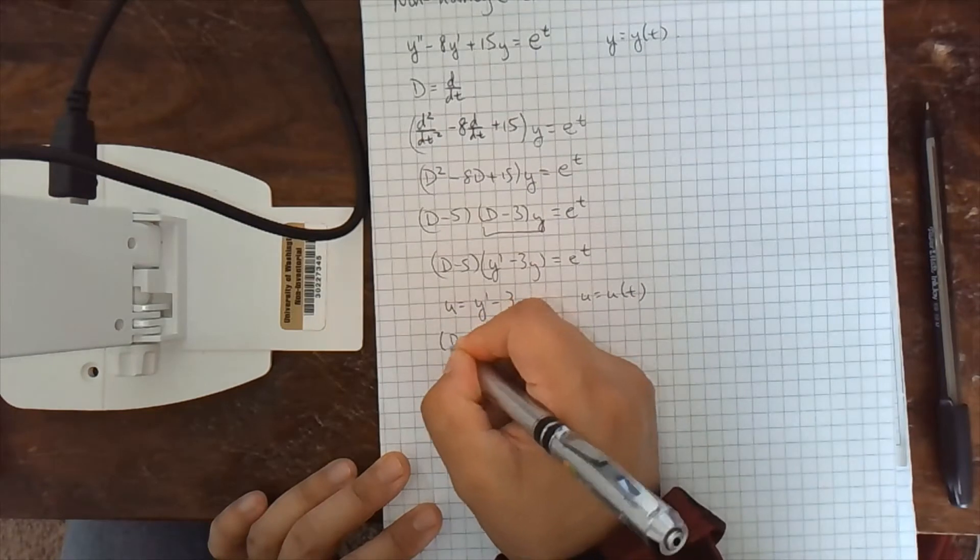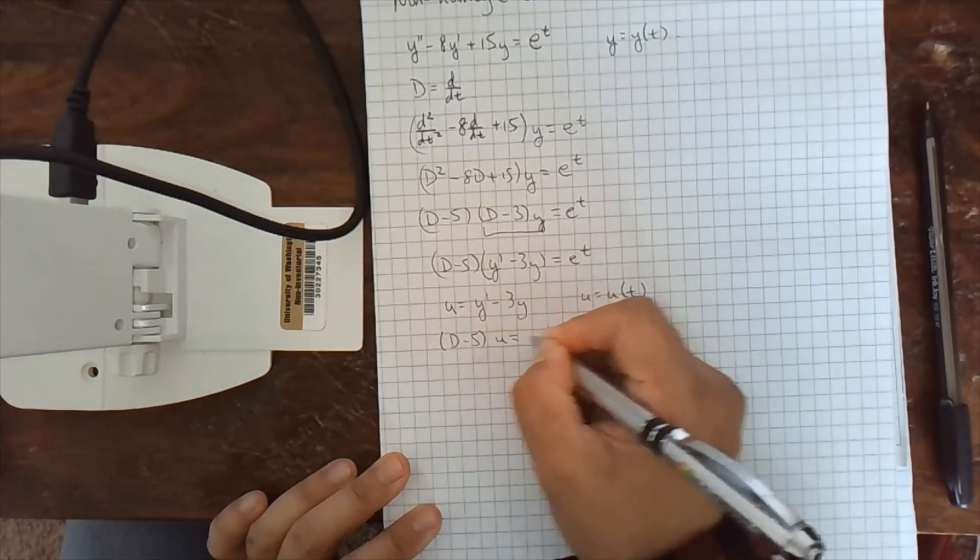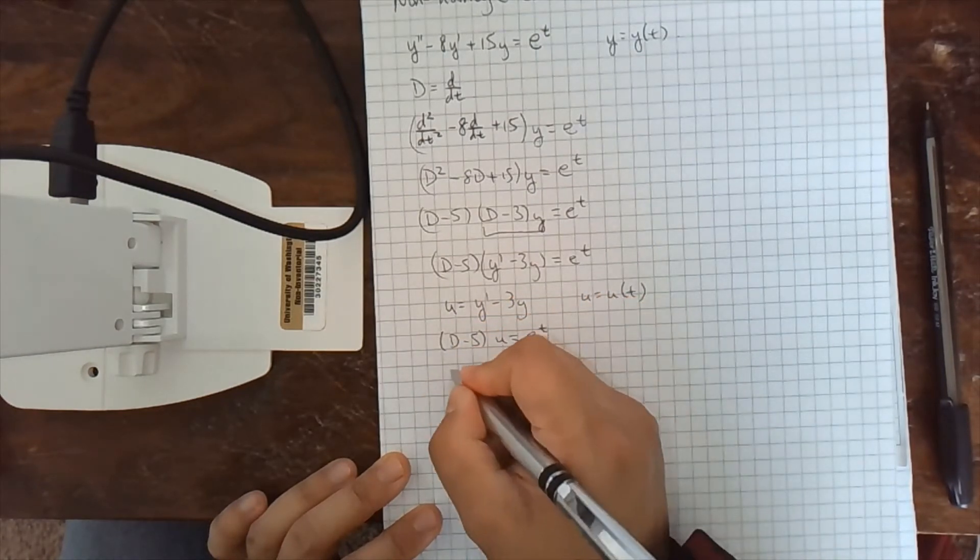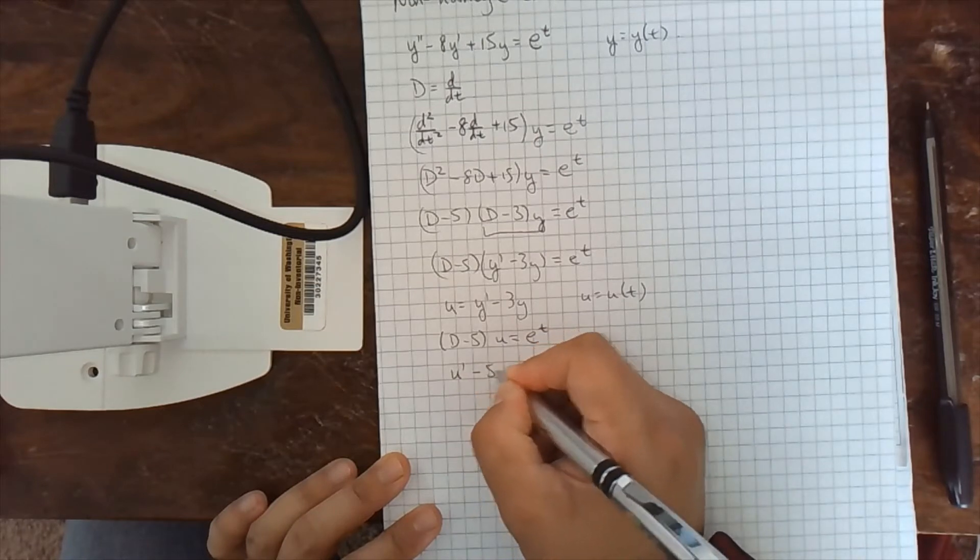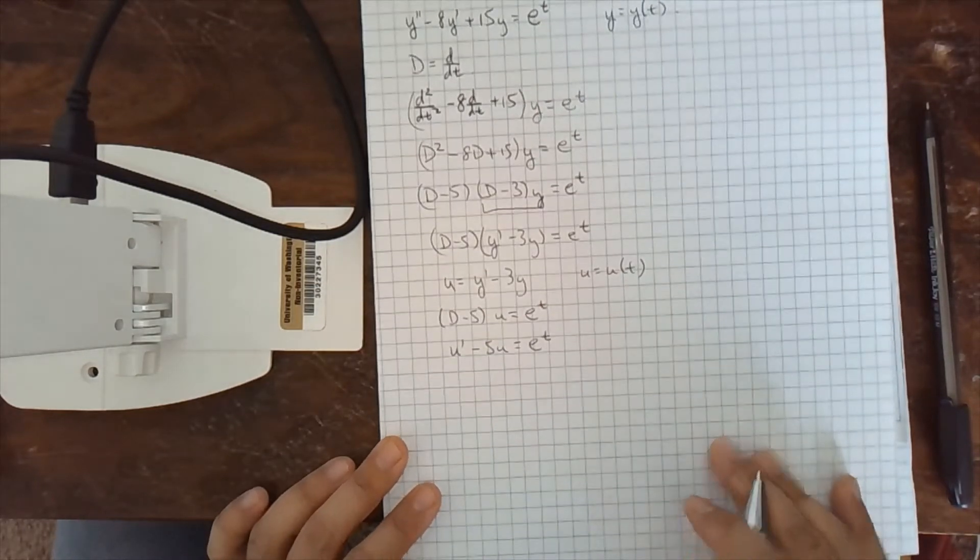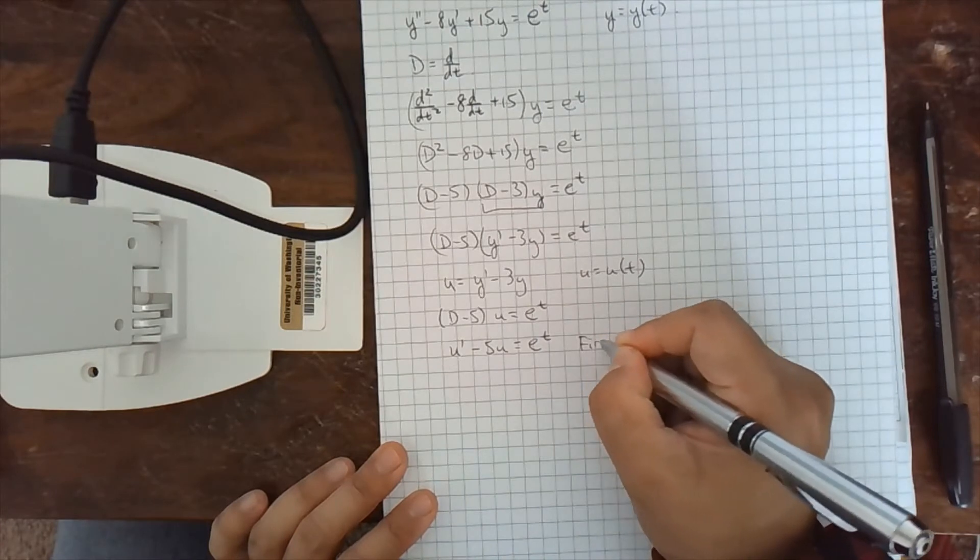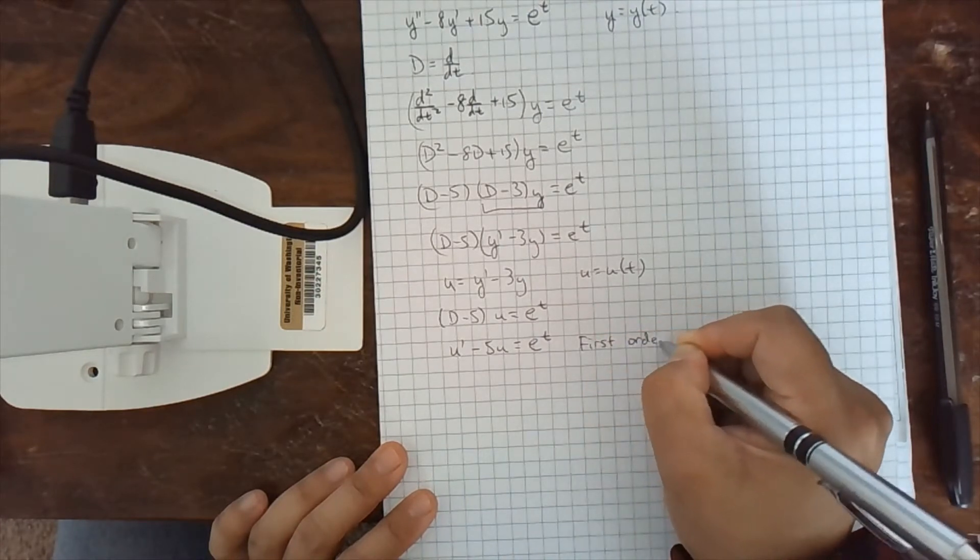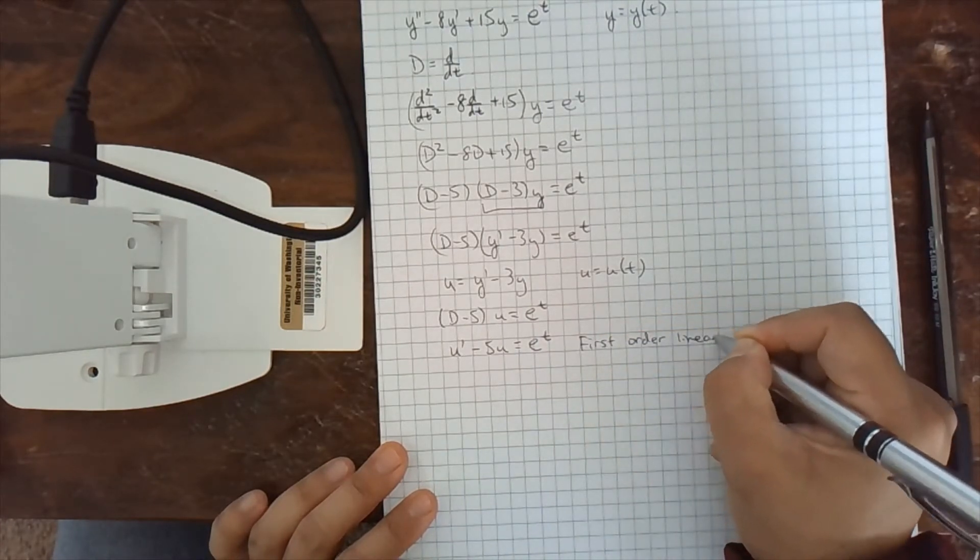And then I have d minus 5 times u is e to the t. Distribute again. So u prime minus 5u is e to the t. And now this is a first order linear differential equation.